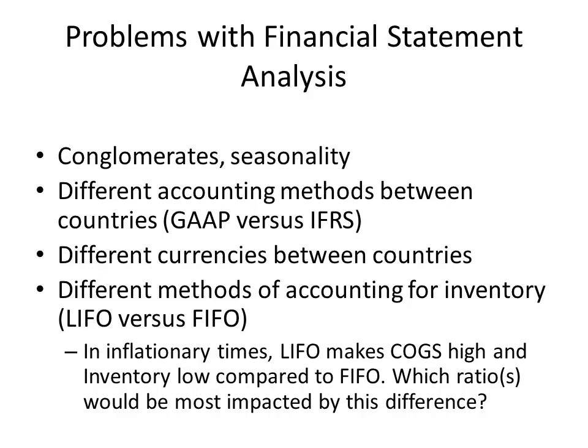Secondly, there are different accounting methods between countries. In the United States, we use the Generally Accepted Accounting Principles as set forward by FASB, or the Financial Accounting Standards Board. In pretty much the rest of the world, they use IFRS, or the International Financial Reporting Standard. These have some different ways of accounting for costs and other issues, which make the numbers not comparable between companies incorporated in the United States and those incorporated elsewhere.